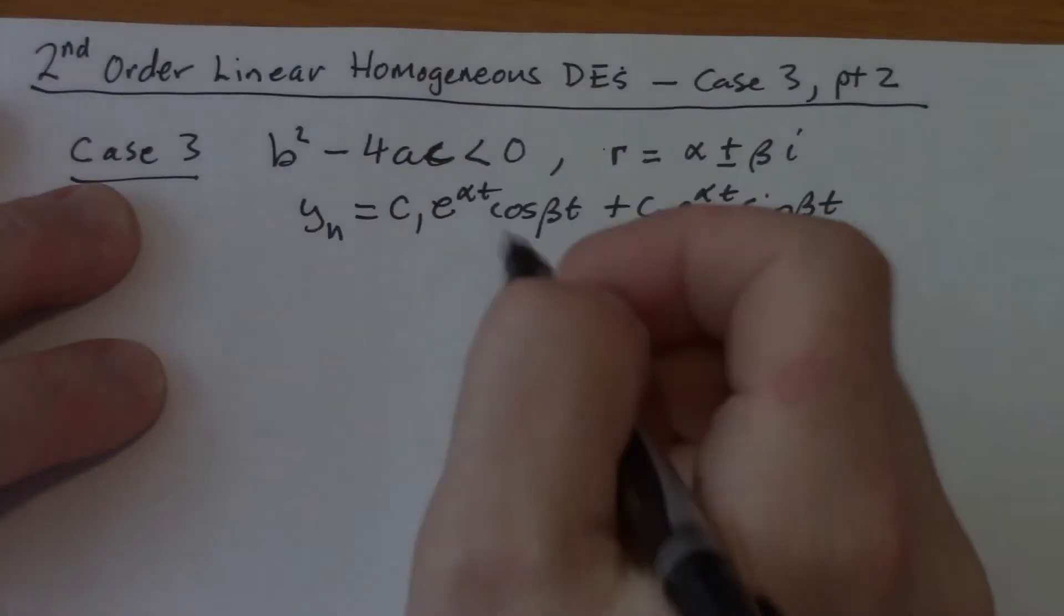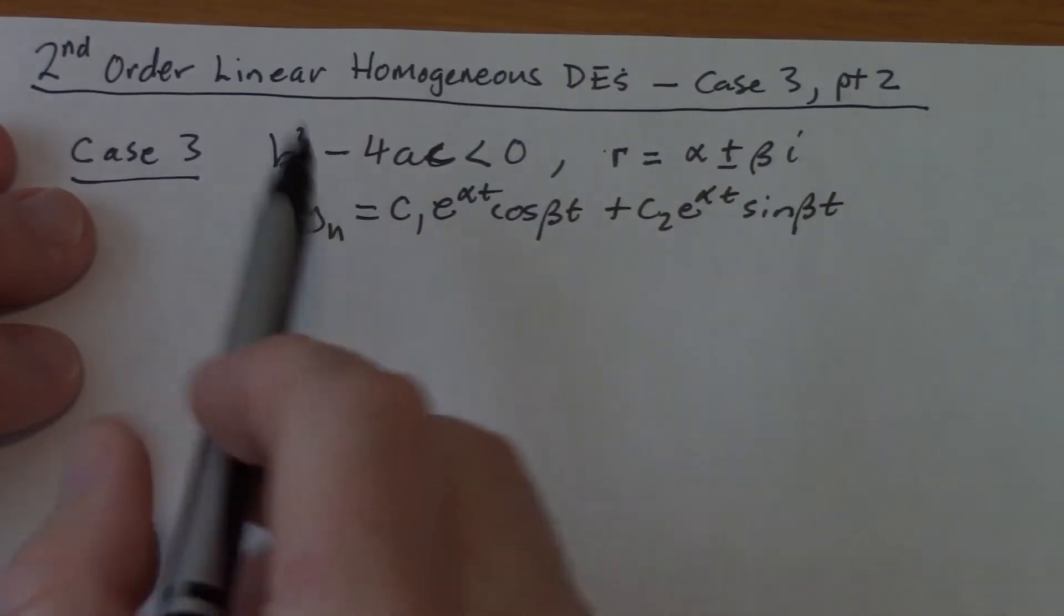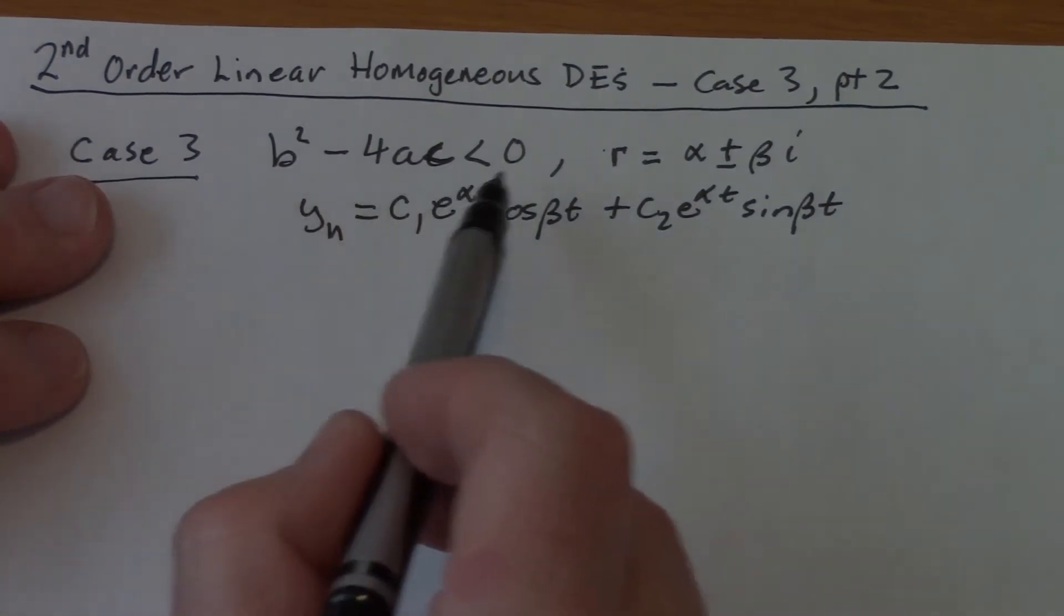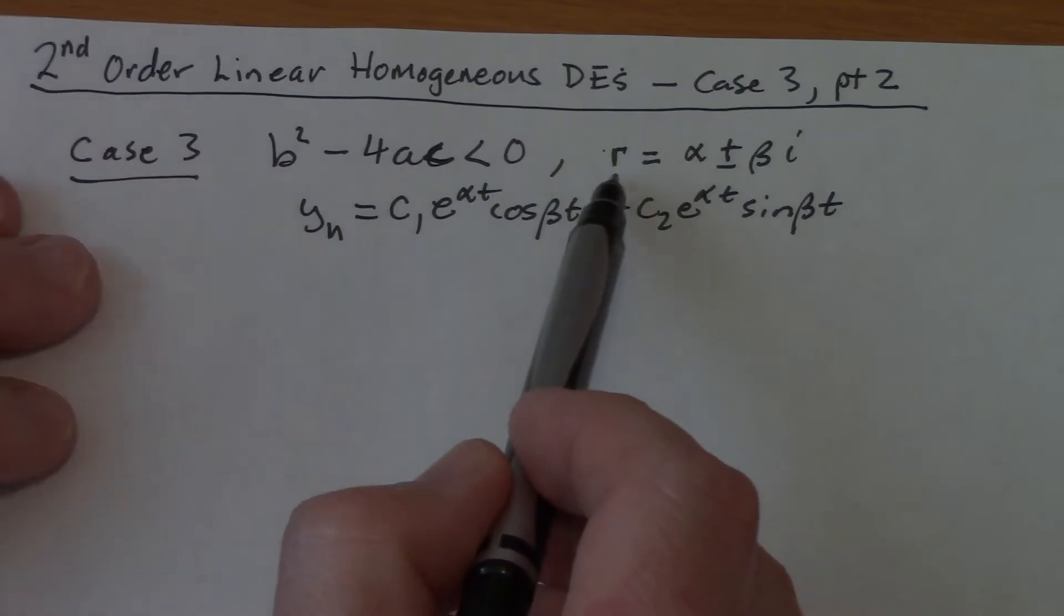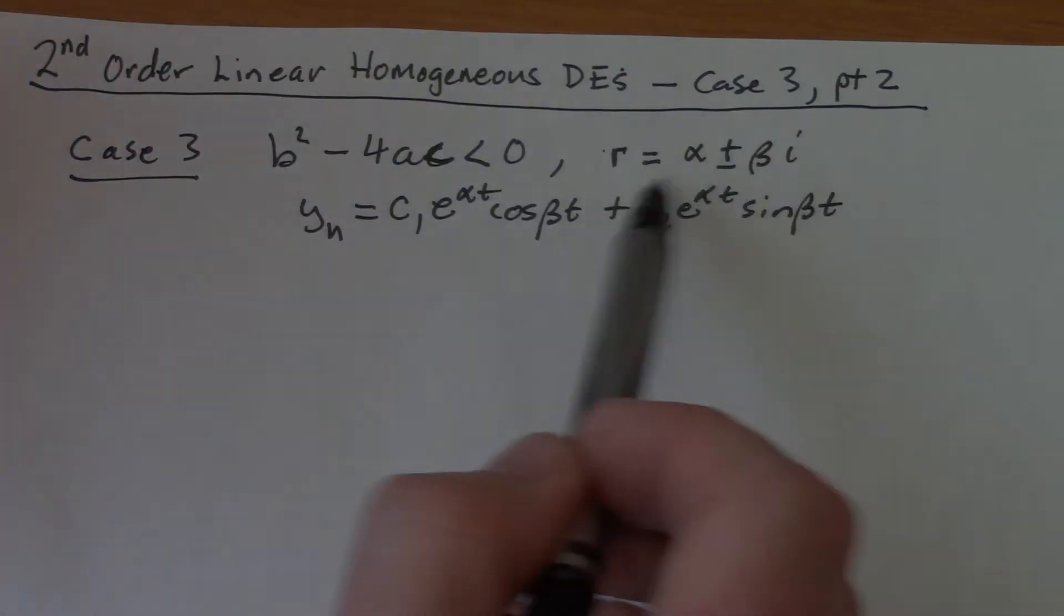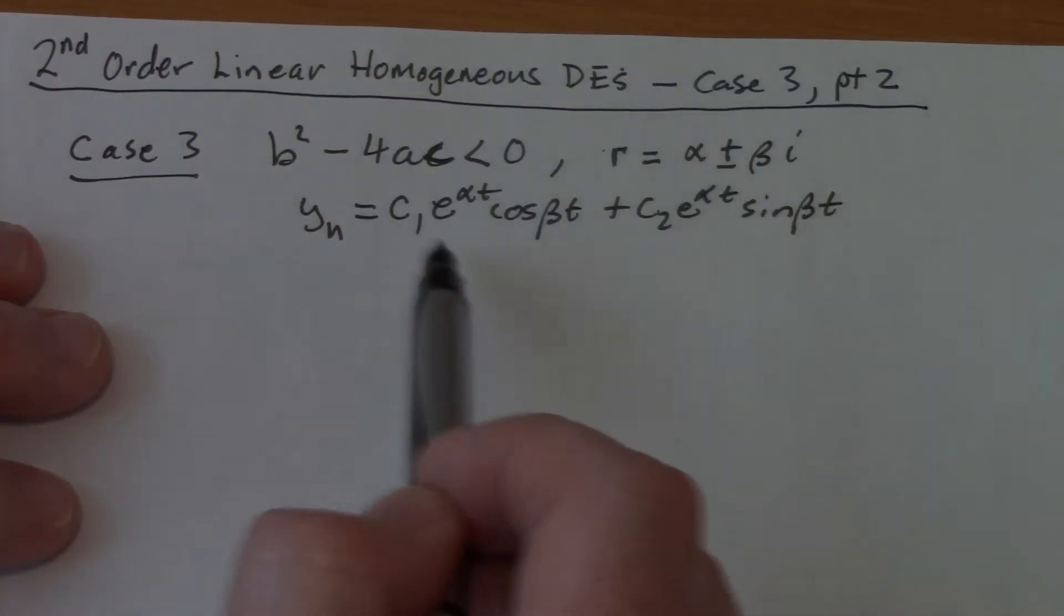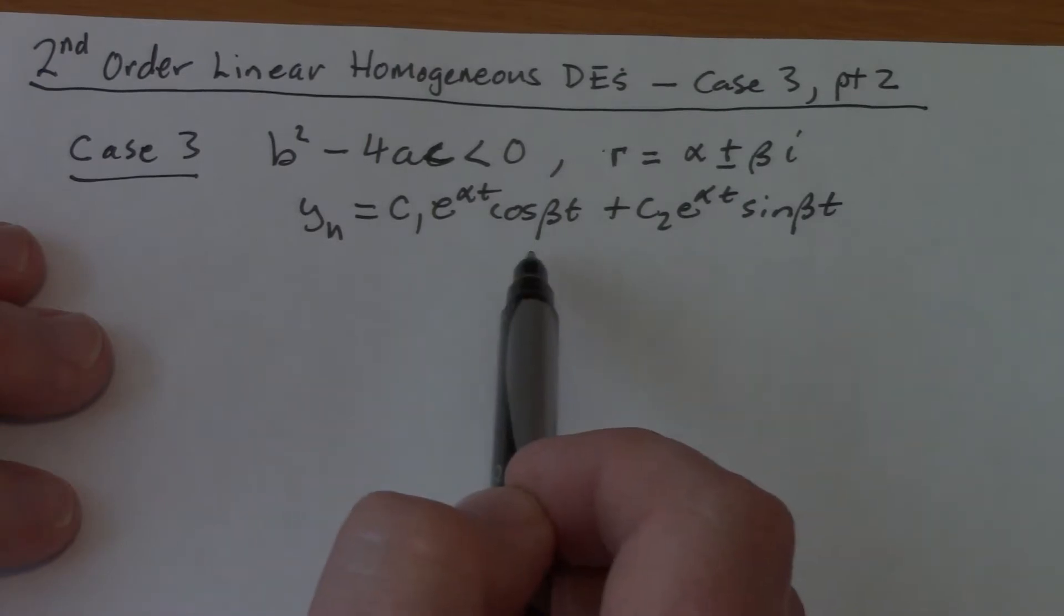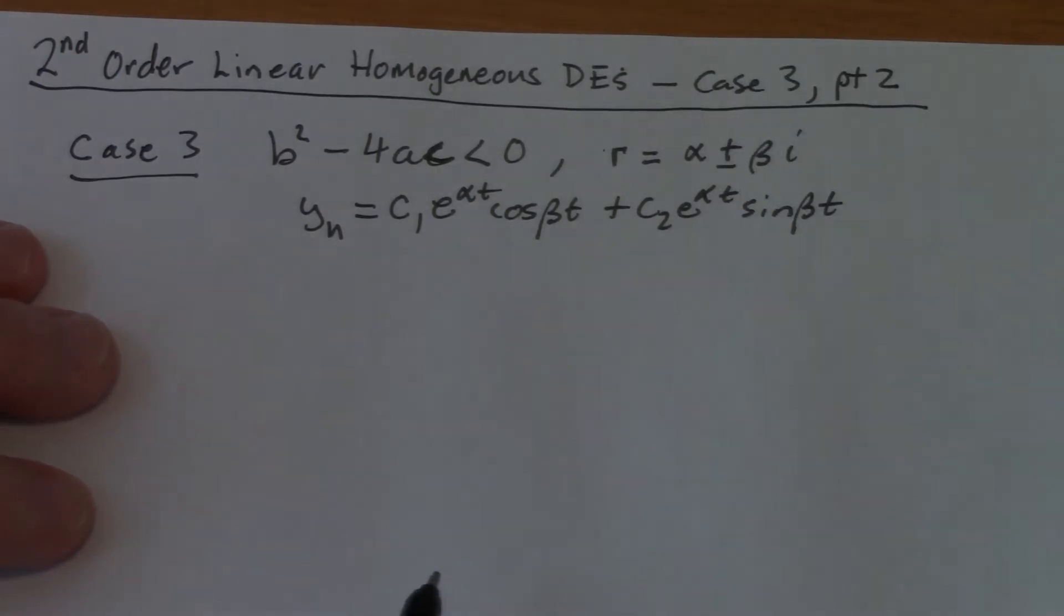Okay, so this is our case 3 part 2. Piggybacking on stuff, what have we found before? In the last video, b squared minus 4ac was less than 0, we said that r would be complex, two complex conjugates, so alpha plus or minus beta i, and then the homogeneous solution would be c1 e to the alpha t cosine beta t plus c2 e to the alpha t sine beta t.